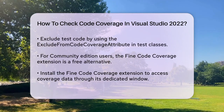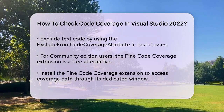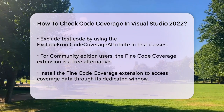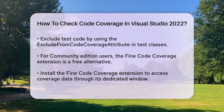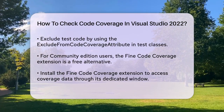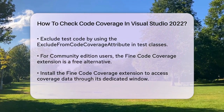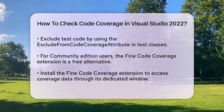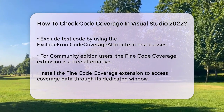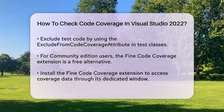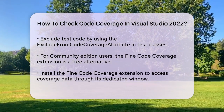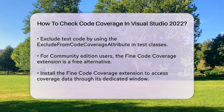For those who can't use the Enterprise Edition, there's a great alternative. The 'Find Code Coverage' Visual Studio 2022 extension is free and works with the Community Edition of Visual Studio. After installing this extension, you can open the Find Code Coverage window from View > Other Windows > Find Code Coverage.